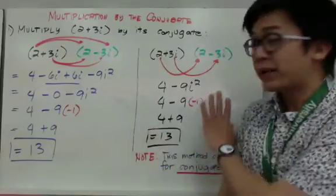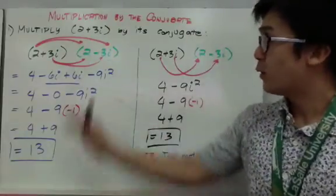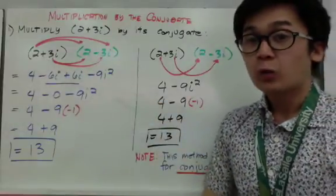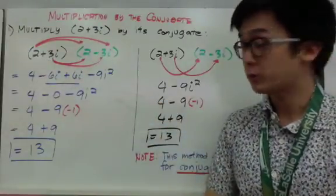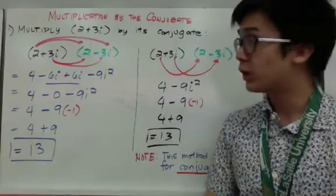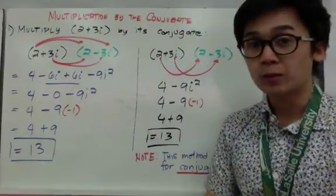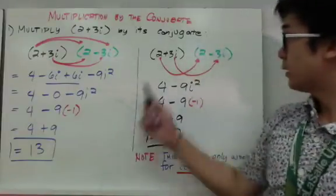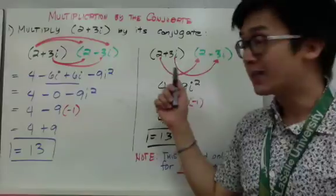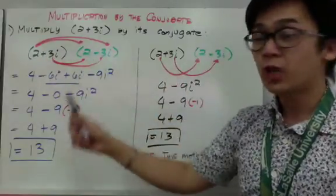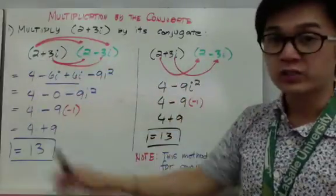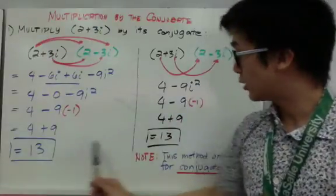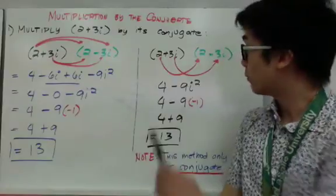On my second solution, I want to point out a shortcut for multiplying a complex number by its conjugate. Take note that this shortcut only works when you are multiplying a complex number by its conjugate. The shortcut is to simply multiply the real parts and the imaginary parts separately — we don't need to use the FOIL method, which takes longer.